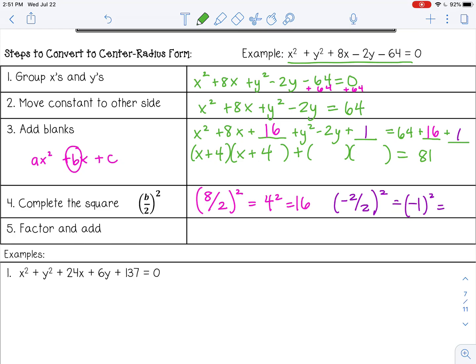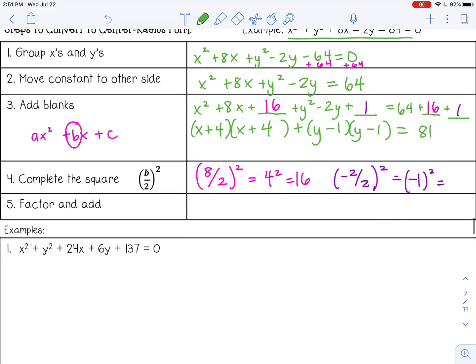I'm going to do the same thing with my y trinomial. I know it's going to be y and y. I'm looking for two numbers that multiply to give me positive 1 but add to give me negative 2, and you should have thought of negative 1. Now I can rewrite these two binomials as a binomial squared because it's the same. I can write the y as a binomial squared and bring down my 81. That now is in center-radius form.